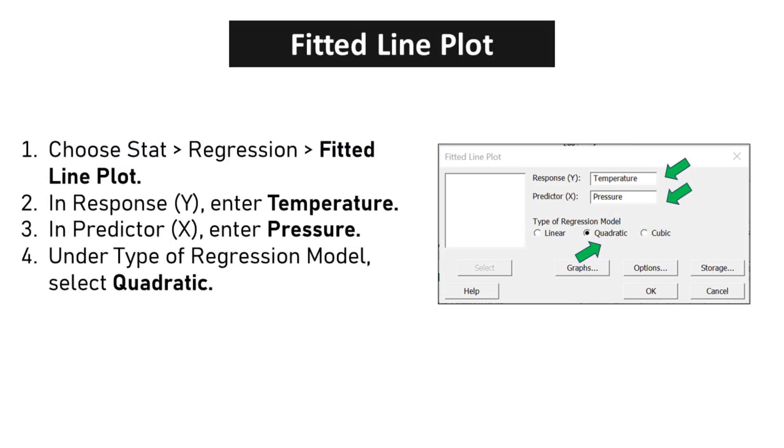Choose Stat, Regression, Fitted Line Plot. In response Y, enter temperature. In predictor X, enter pressure. Under Type of Regression Model, select Quadratic.